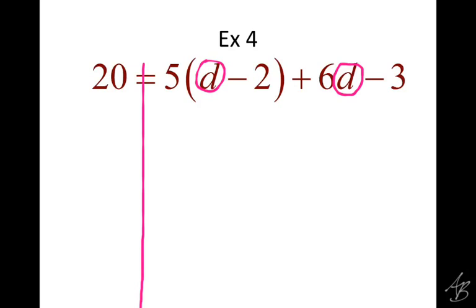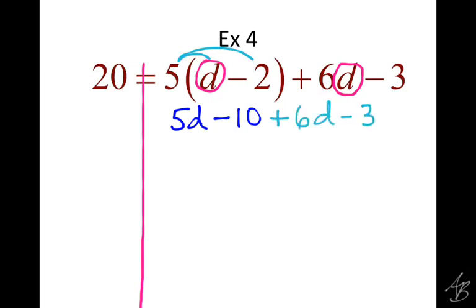You'll notice here that we have 2 d's, so to get d by itself we're going to have to simplify. The first thing we do is distribute: 5 times d is 5d, and 5 times negative 2 is negative 10. Then everything else comes down — we still have plus 6d and minus 3. We need to make sure we also bring down our 20 and the equal sign on the left side. Every time we do something, we need to simplify and bring down both sides.